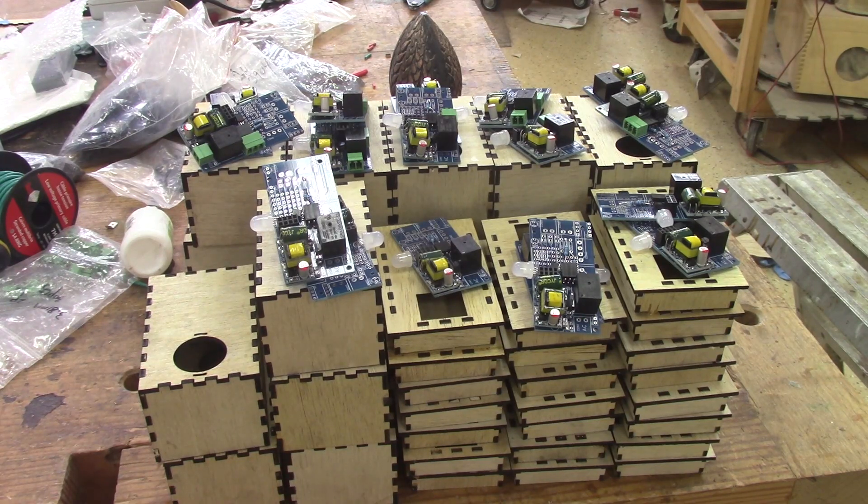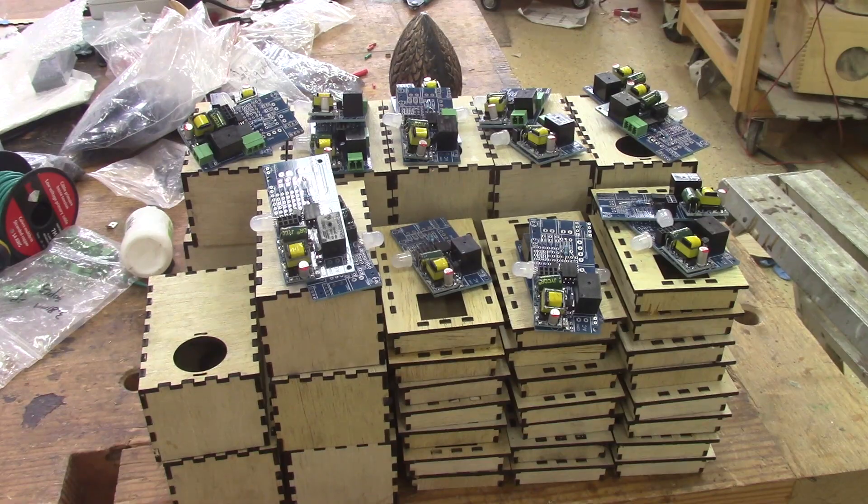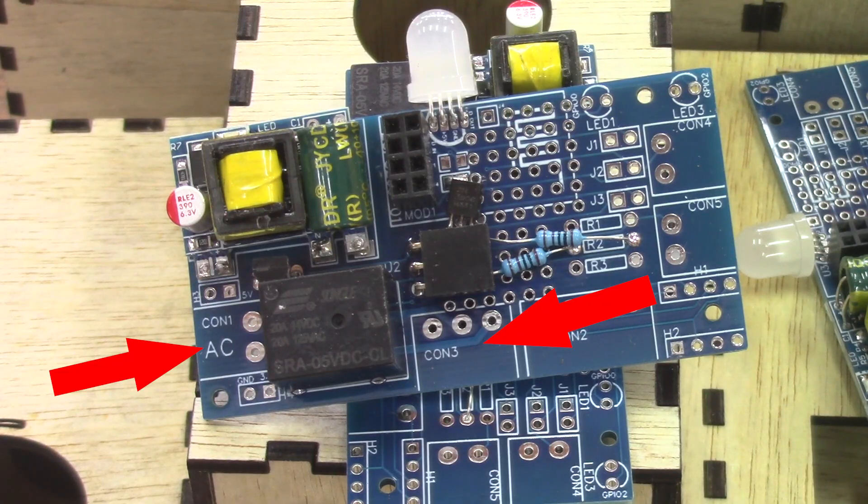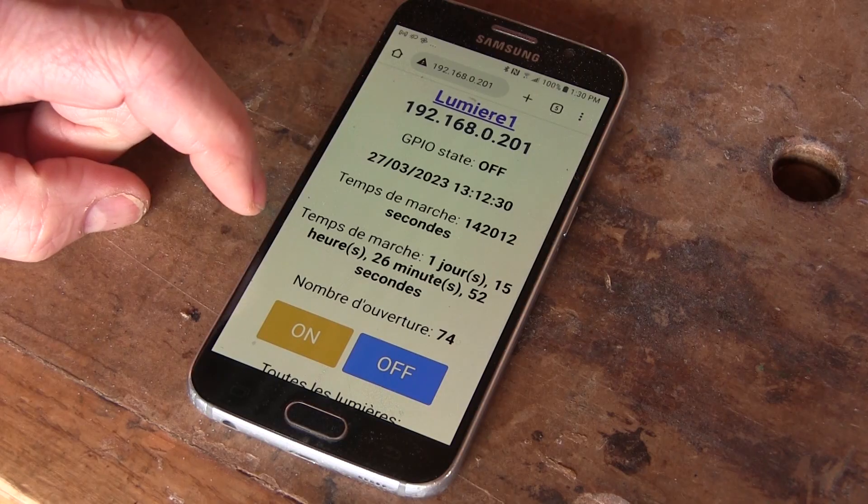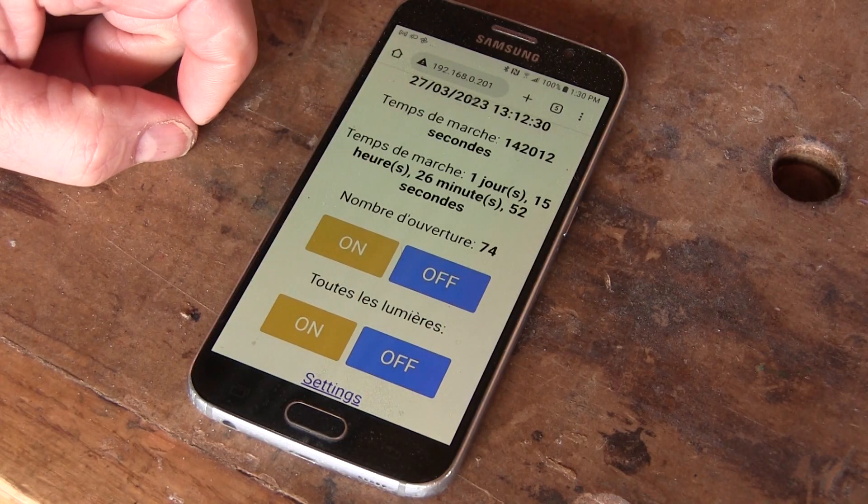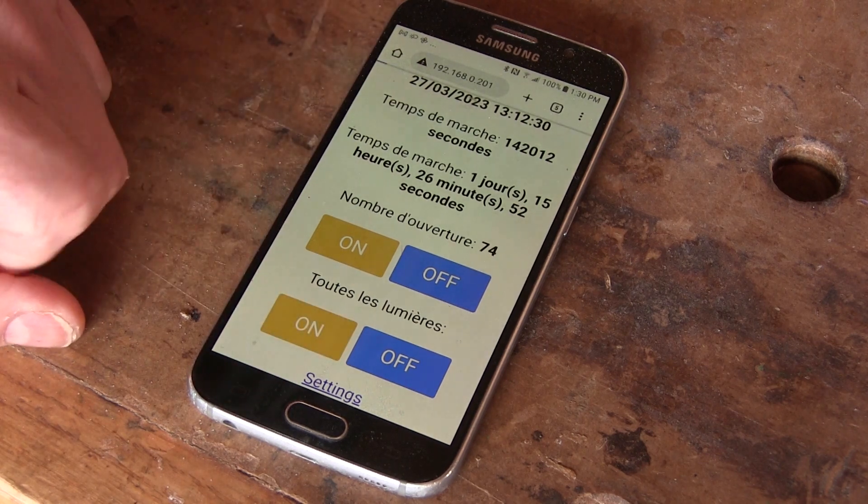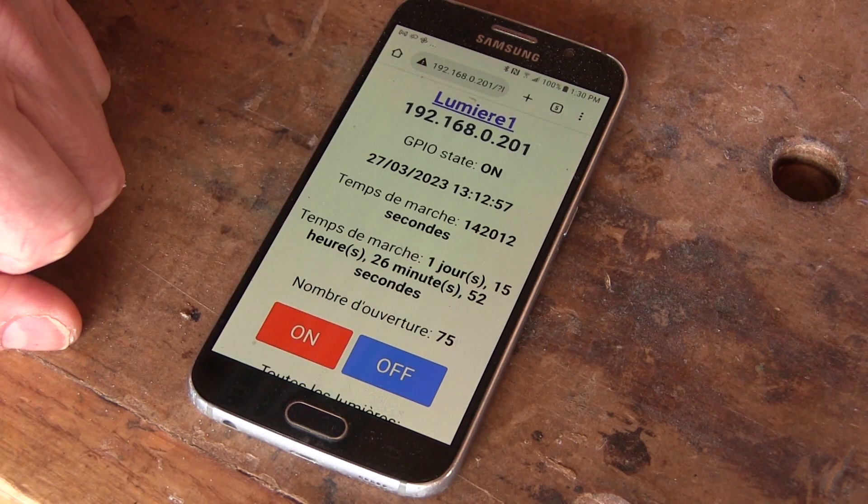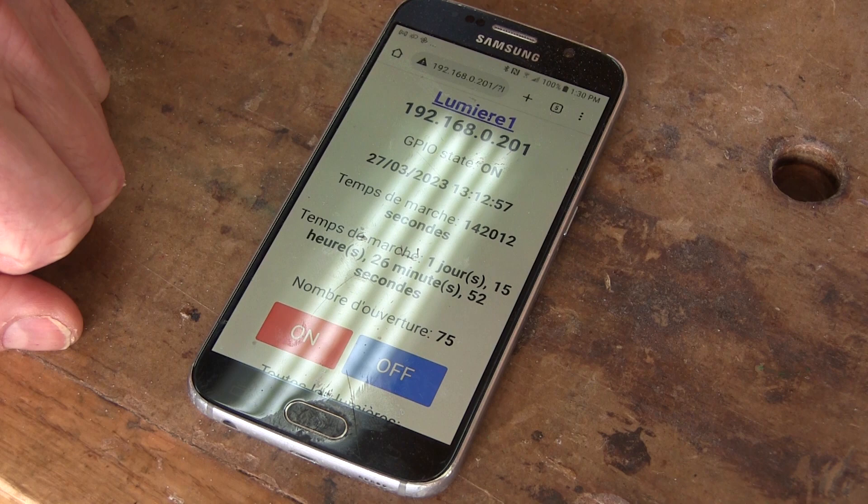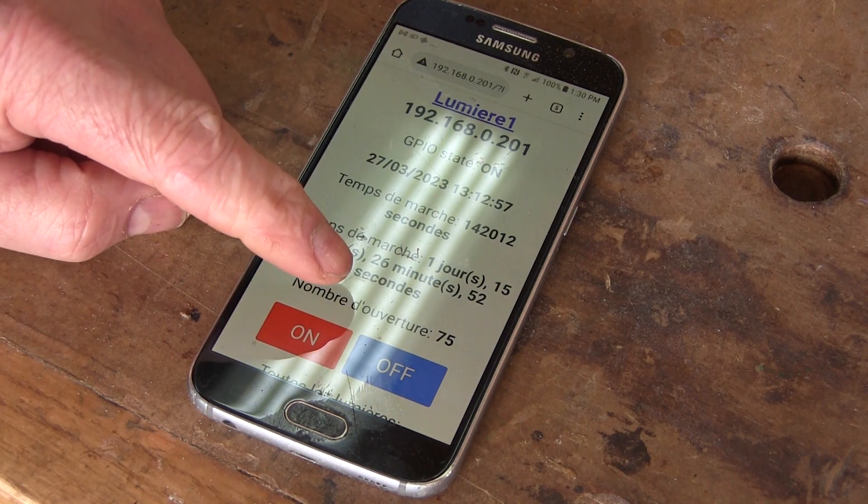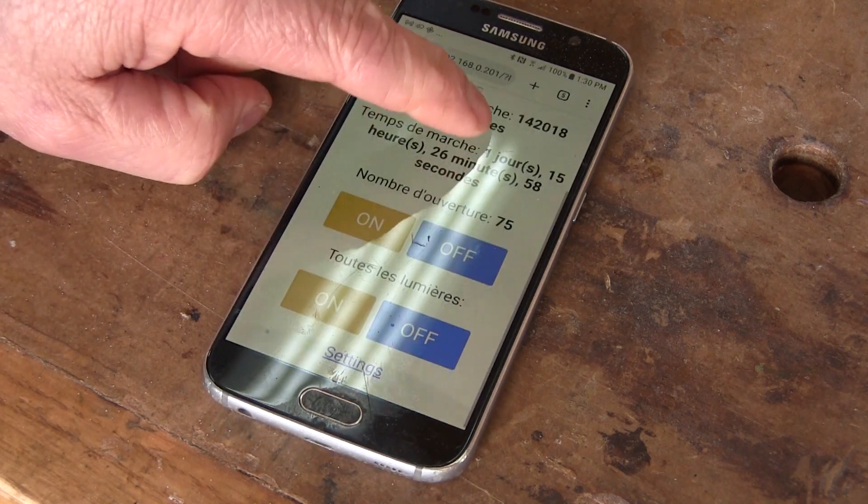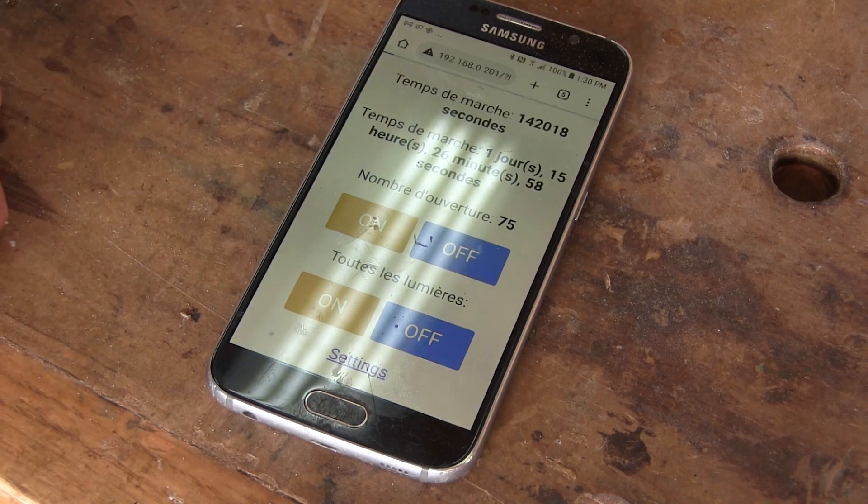While waiting for my connectors, I was able to finish all the boxes and the PCBs. At least, all that I was able to solder. I'm still missing connectors. All those modules will have a simple web page, so I can turn them on individually or all of them in one go. But I think having a dedicated box to do this would be nice.